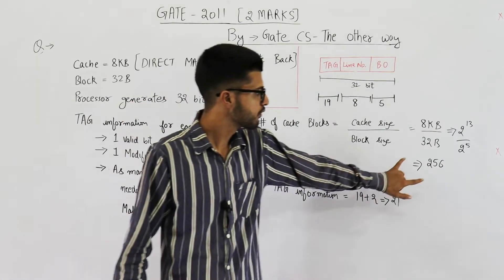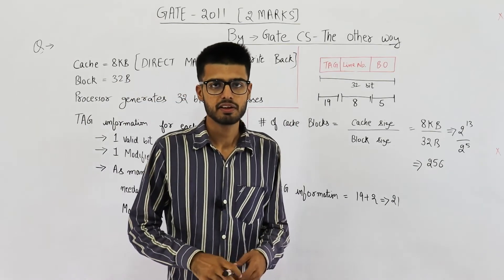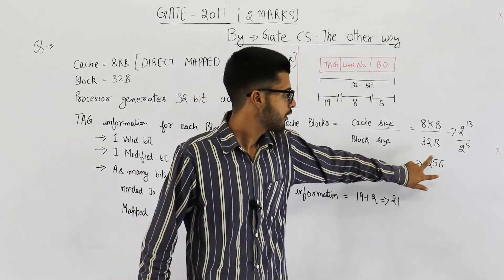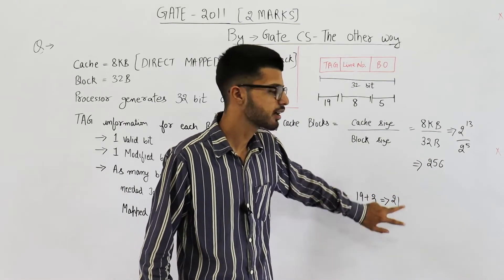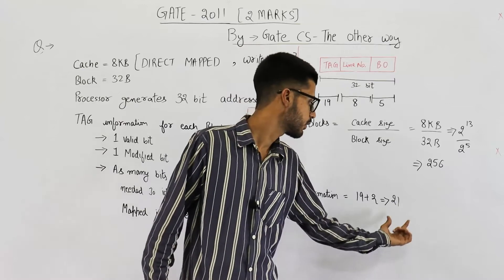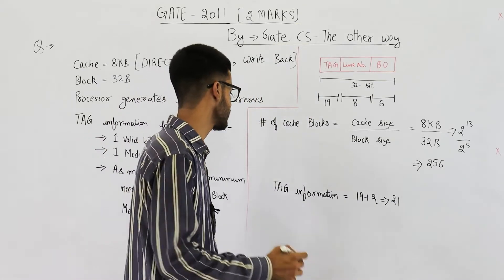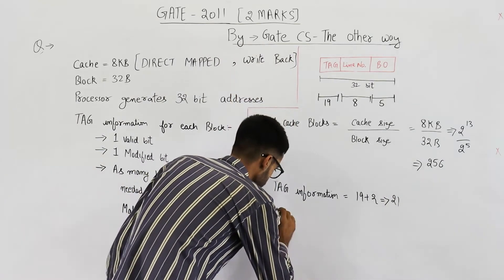Now you have 256 lines. And you very well know, with each and every cache line, we save some tag information bits. We have 256 cache lines. One tag information data is of 21 bits. So in total size of tag directory will be 256 into 21. That is your answer.